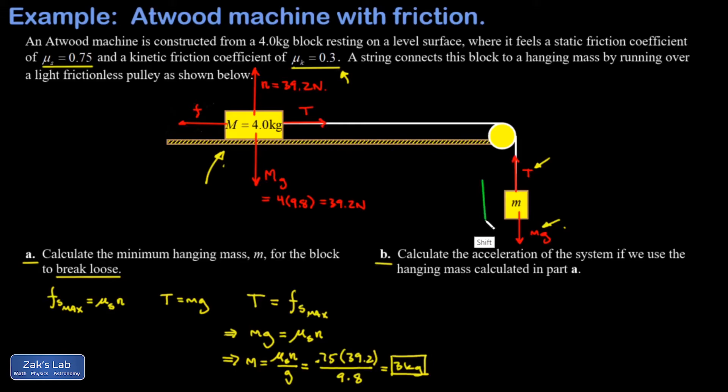One of the key points to analyzing Atwood machines that are accelerating is that we analyze each mass in a coordinate system where we use positive for the actual direction of the acceleration. That's going to be downward for the hanging mass and rightward for the mass that's on the surface. Then we apply Newton's second law to each moving piece of the system, and it gives us a system of equations to solve.